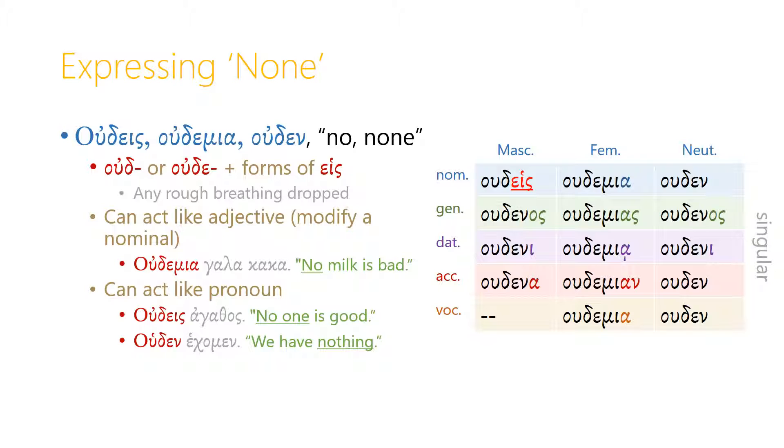Like other numbers, oudes, oudemia, and uden can act like an adjective and modify a nominal. So we might say oudemia galakaka, and that would mean no milk is bad, or none of the milk is bad. But it can also act like a pronoun, and it really is a pronoun. Oudes agathos, we're saying no one, oudes, is good. Or we can say uden echomen, we have nothing.